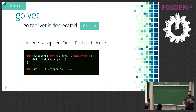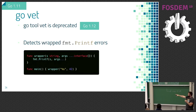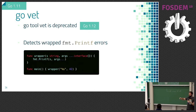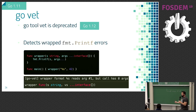go tool vet is deprecated — go vet is the thing you should be using now. They are exactly the same. Additionally, go vet gets smarter error detection: if you have a wrapper function that takes a format string and forget to pass the argument, it will now detect that and say 'wrapper format percent has reached argument one but go tool has zero arguments.'